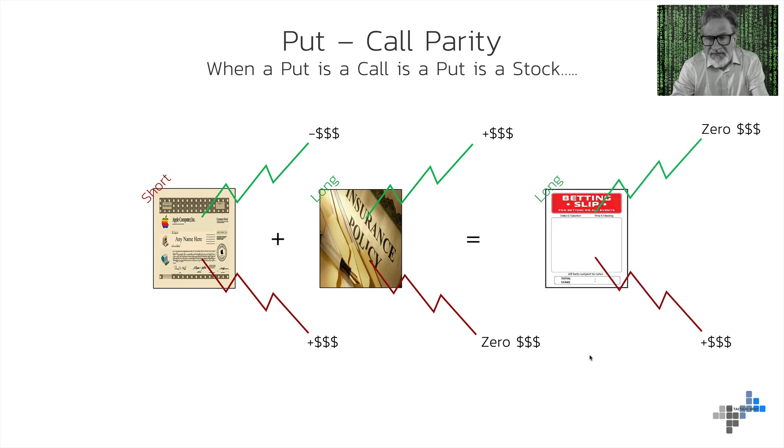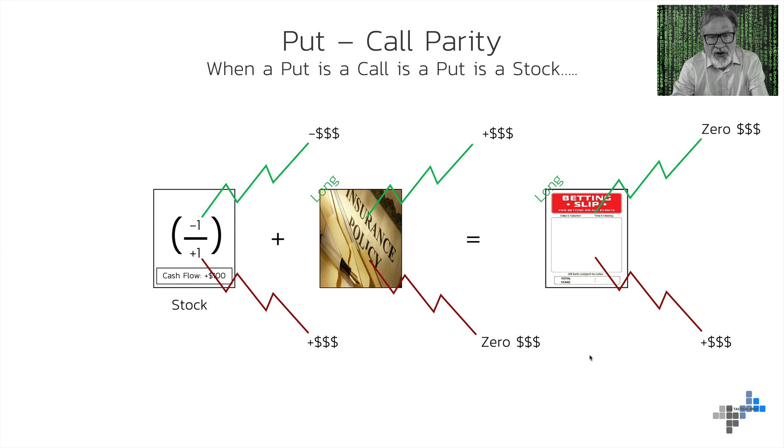And, if the market goes down, you've spent your insurance policy, nothing really happens, but you make a lot of money on the short side you have in the stock. If we add these together, we have a betting slip again. If the market goes up, I make nothing. I just lose my premium, my insurance policy money that I've spent. But, if the market goes down, I make a lot of money. Sounds very much like a put option.